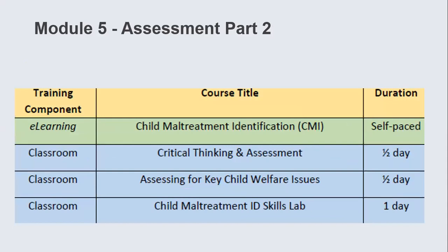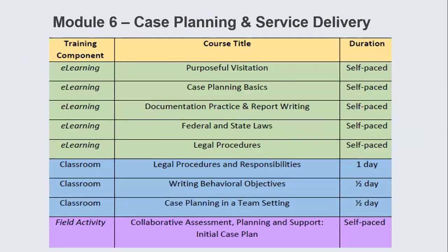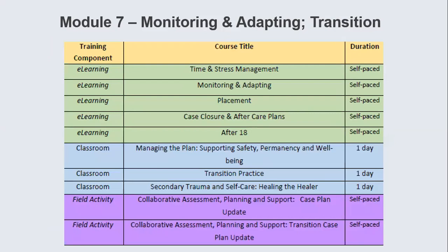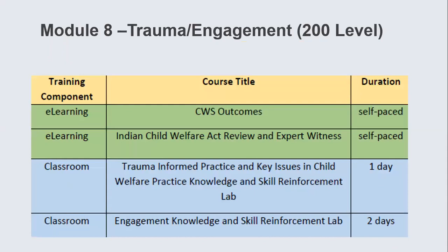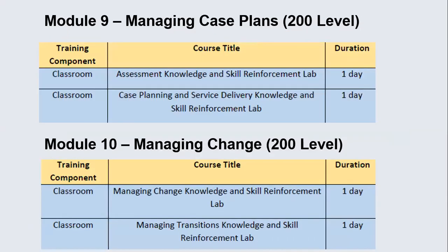Module five has one e-learning before class and no field activities after that. Module six has five e-learnings before class, and then workers do their field activity around initial case planning in a team setting. Module seven has five e-learnings before class, with two field activities due around case plan update and transition case plans. Module eight is a 200-level deeper dive class with two e-learnings before those classes. Modules nine and ten are classes only — at that point workers have no more e-learnings or field activities and are just finishing up classes.